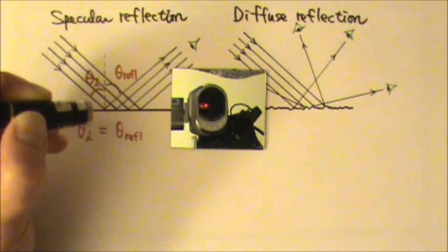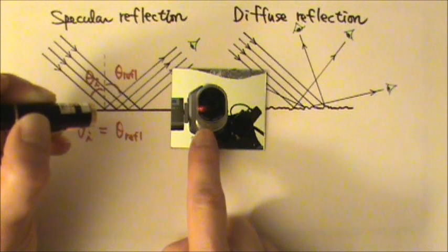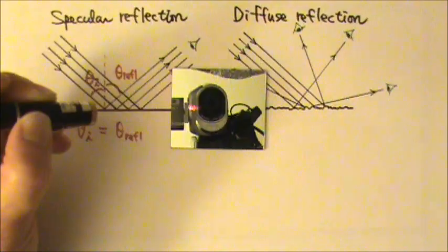Of course, in this case we do see a faint red dot right here on the mirror because there is a little bit of diffuse reflection off of the mirror.